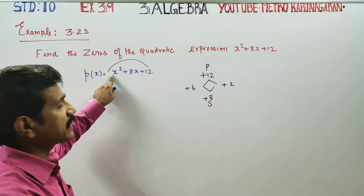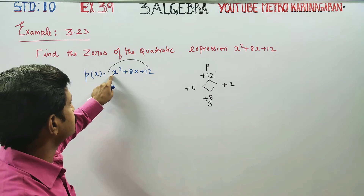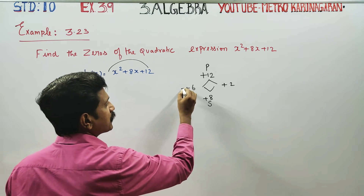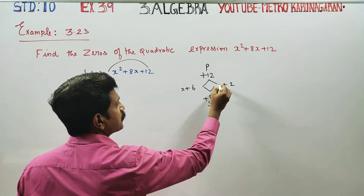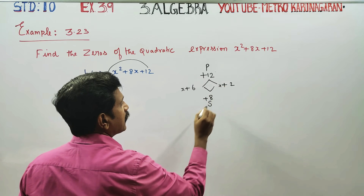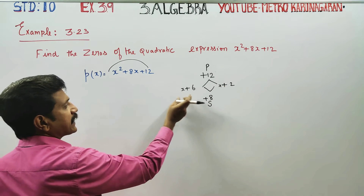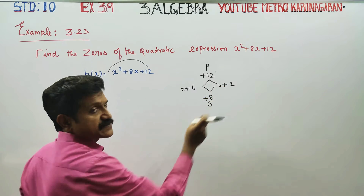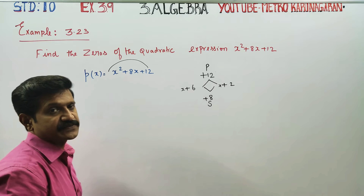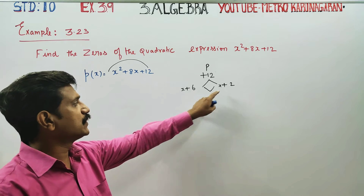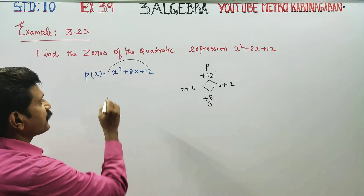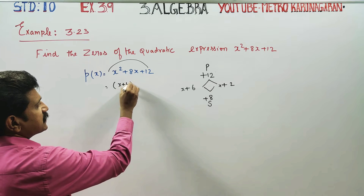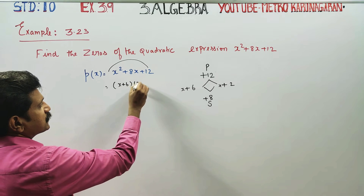X is not a number by itself here — this is an expression. This is a direct number. X plus 6, X plus 2. Factorization gives us X plus 6 times X plus 2.